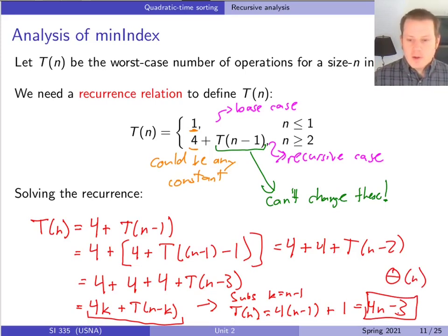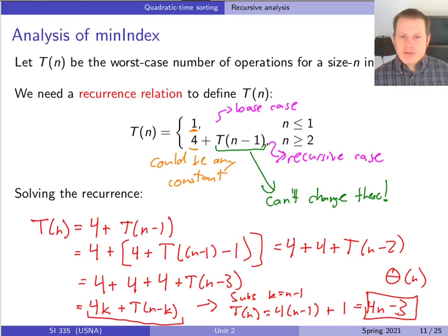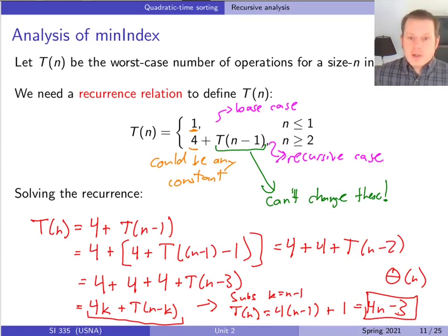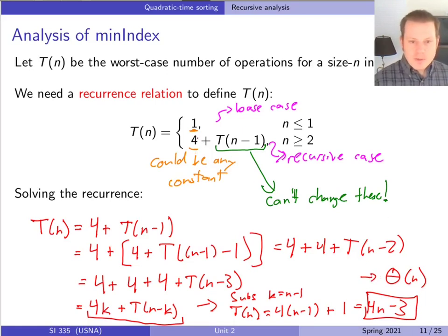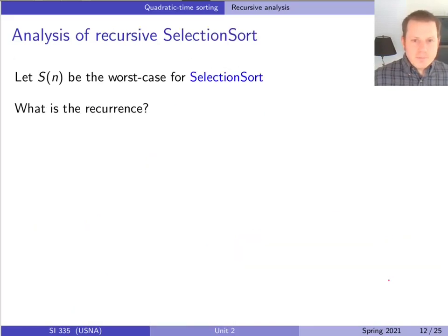You don't have to go through every one of these detailed steps every time. This should already be a bit familiar from data structures, but if you're rusty on solving recurrences, go back and review those notes. We're going to get plenty of practice. The pattern to recognize: we're taking a constant amount off T(n) and doing a constant amount of work each time, so it's always big theta of n. It makes sense — the cost of finding the smallest thing in a list shouldn't be surprising.